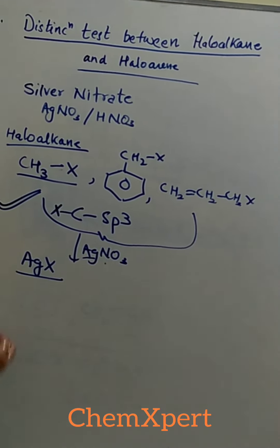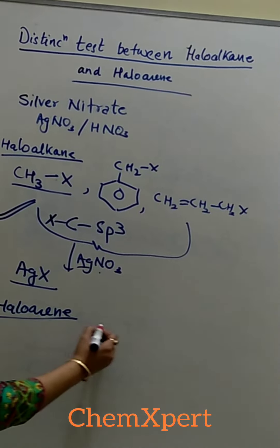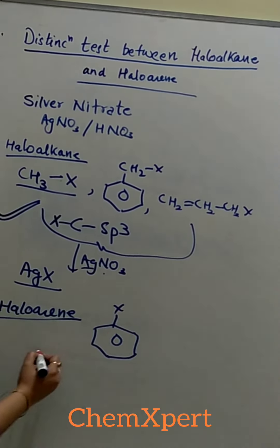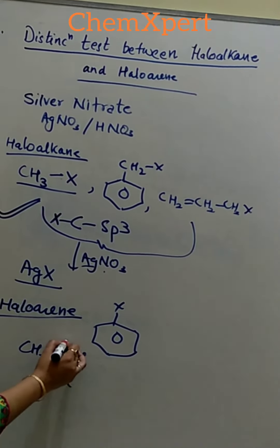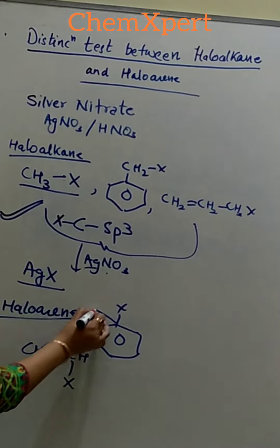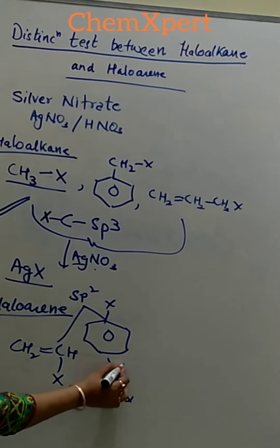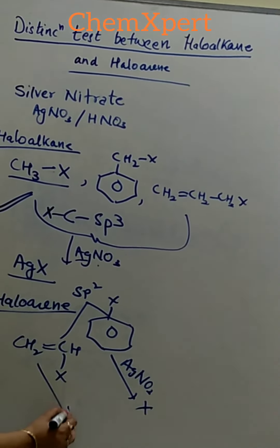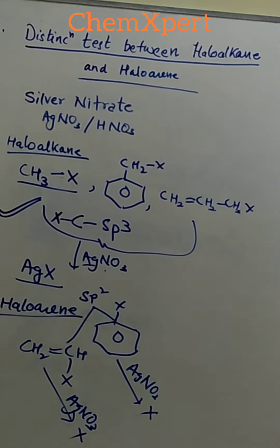Now in case of haloarene, or the compound in which halogen is attached to a carbon which is sp2 hybridized. Now these carbons are sp2 hybridized. So if we treat them with AgNO3, then they will not give the positive test, or they will not form any precipitate.